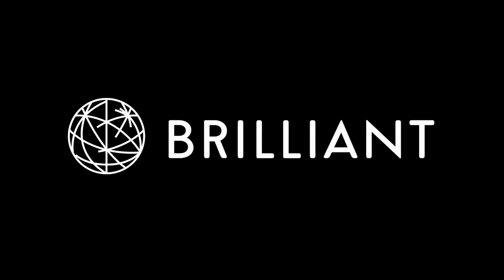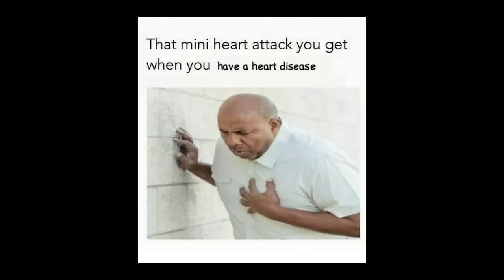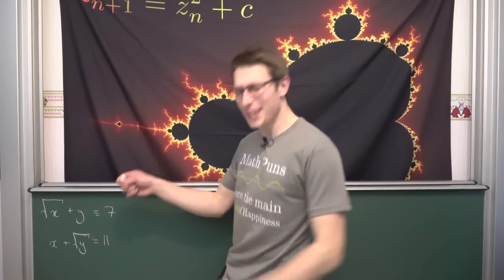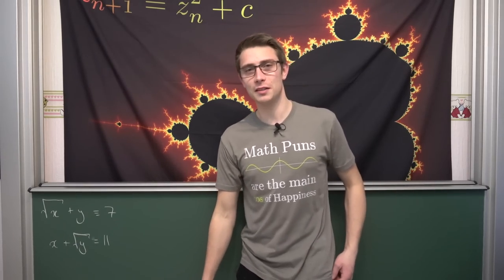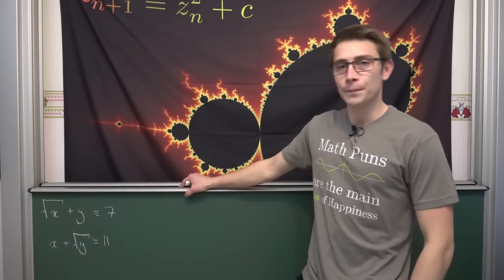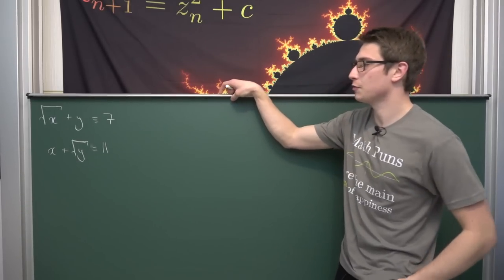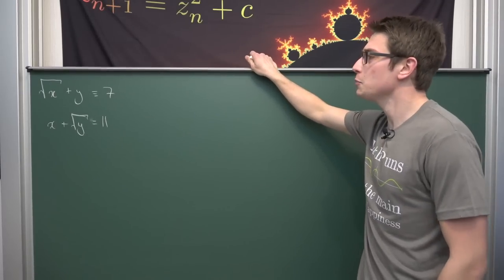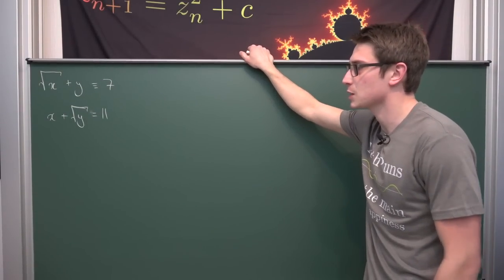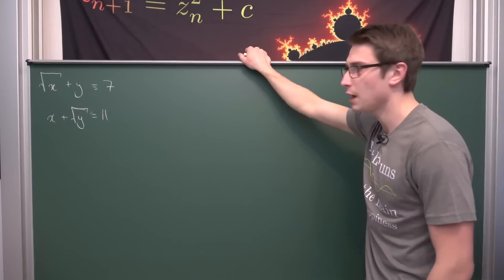A huge thanks to Brilliant for sponsoring this video. Today we're going to take a look at this nonlinear Diophantine equation: square root of x plus y equals 7, and x plus square root of y equals 11.